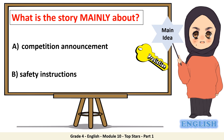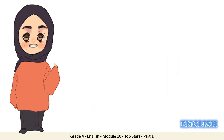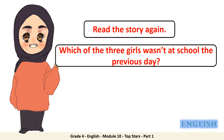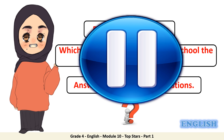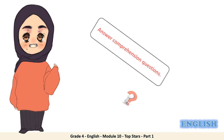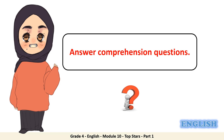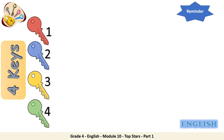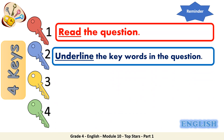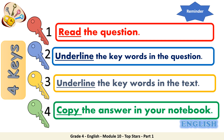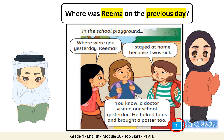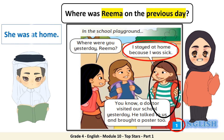Now let's go back to our question to check whether your prediction was correct or not. What is the story mainly about? Well done — safety instructions. Now let's read the story again to answer comprehension questions. Before we do that, here is a reminder of the technique: read the question, underline the keywords in the question, underline the keywords in the text, copy the answer in your notebook.